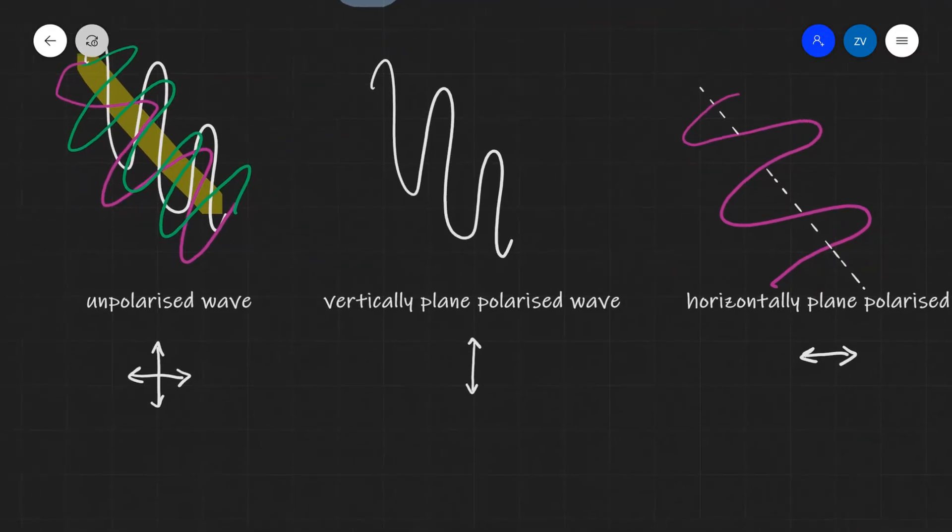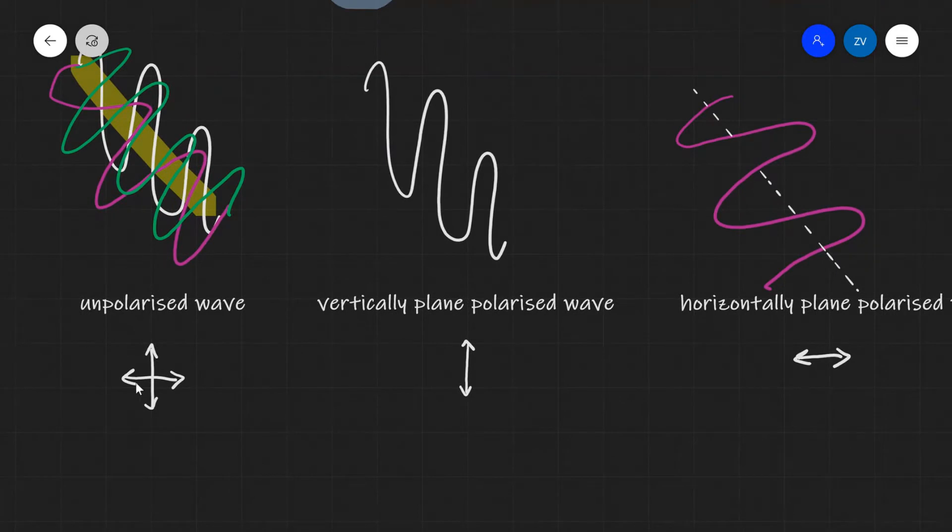And this is denoted with the following symbol. So essentially, it's a cross denoting that the particles are moving both up and down. They have a component moving up and down, a vertical component.